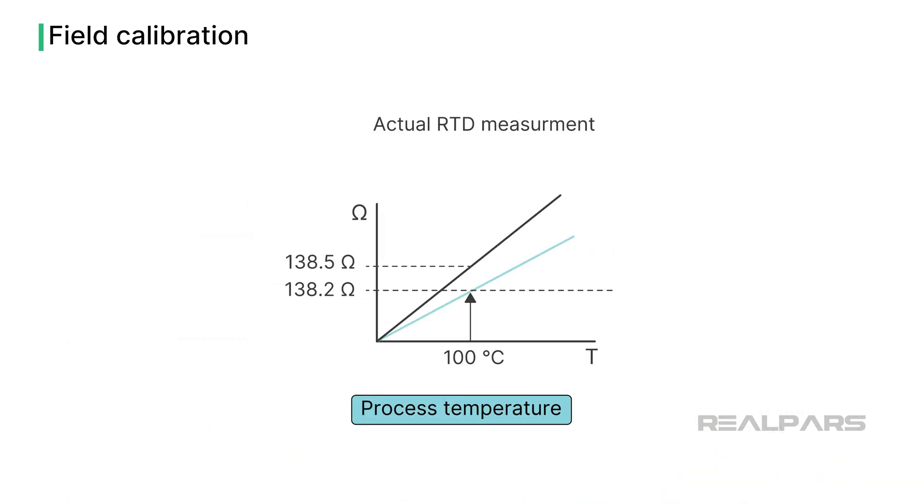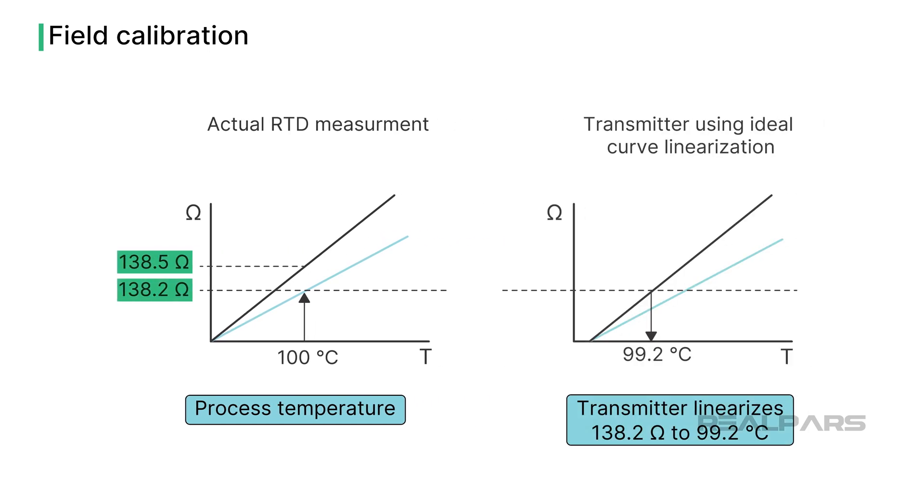RTDs cannot be adjusted to compensate for inaccuracies. So offset or scaling corrections are required if the transmitter is capable. It's worth noting that applying a correction factor in a PLC or DCS is often possible.